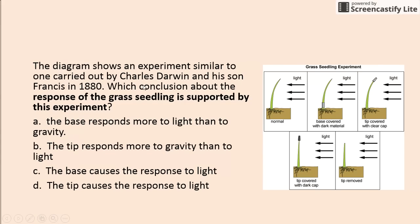The diagram shows an experiment similar to one carried out by Charles Darwin and his son Francis in 1880 — you don't need to know anything about that to answer the question. Which conclusion about the response of a grass seedling is supported by this experiment? Light is coming at it and it leans toward the light. With a clear cap on the tip, it still bends toward the light. With a dark cap on the tip, it no longer bends. With the tip removed, it's also not affected. The tip causes the response to light — answer D.